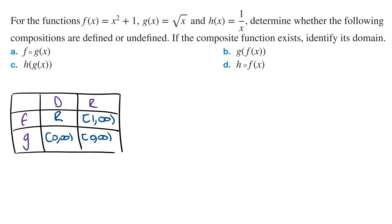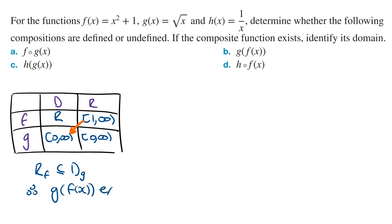Part B: g of f of x. To determine if g of f of x exists, you need to check whether the range of the inner function — this time f of x — is equal to or a subset of the domain of the outer function, which is g. We already have this information from part A. Reading from the table, the range of f, which is from 1 to infinity, is a subset of the domain of g, which is from 0 to infinity. So the composite function g of f of x is defined — it exists.